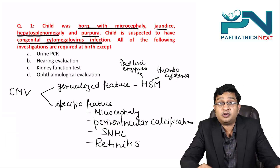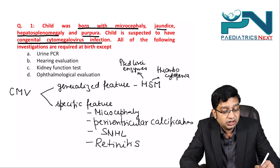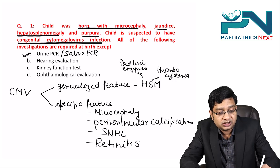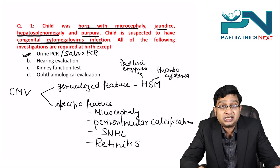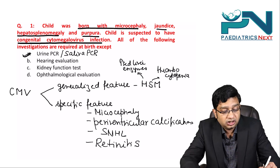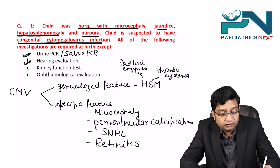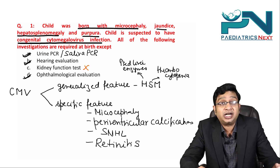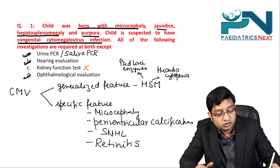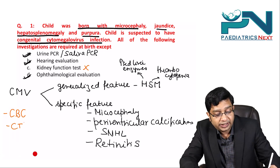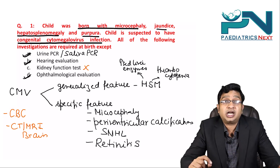Specific features of CMV also include sensorineural hearing loss and retinitis. For confirmation, urine or saliva PCR is required. Hearing evaluation is indicated since CMV is the most common infectious cause of SNHL in children. Ophthalmological evaluation, CBC (to rule out thrombocytopenia), and CT or MRI brain are also required. The kidney function test is NOT indicated.